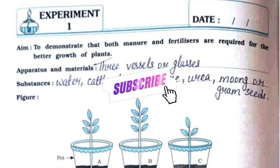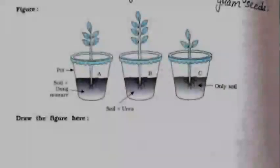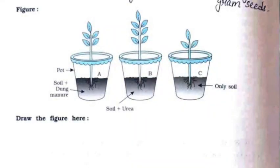Please do subscribe to my channel for more videos just like this. The apparatus and materials are three vessels or glasses. The substances required are water, cattle dung manure, urea, moong or gram seeds. You need to draw the same figure in the space given.